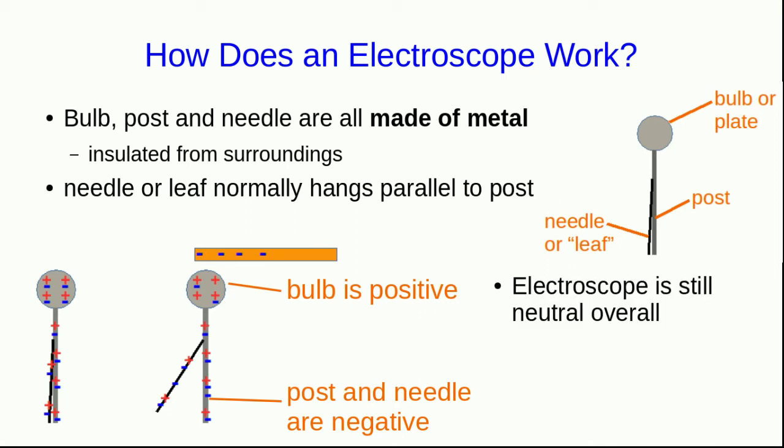Notice that the electroscope is still neutral overall. We haven't added any charge to it. We've just moved charge around on it. We've separated the charge. We call this polarization. We say that the electroscope is now polarized.